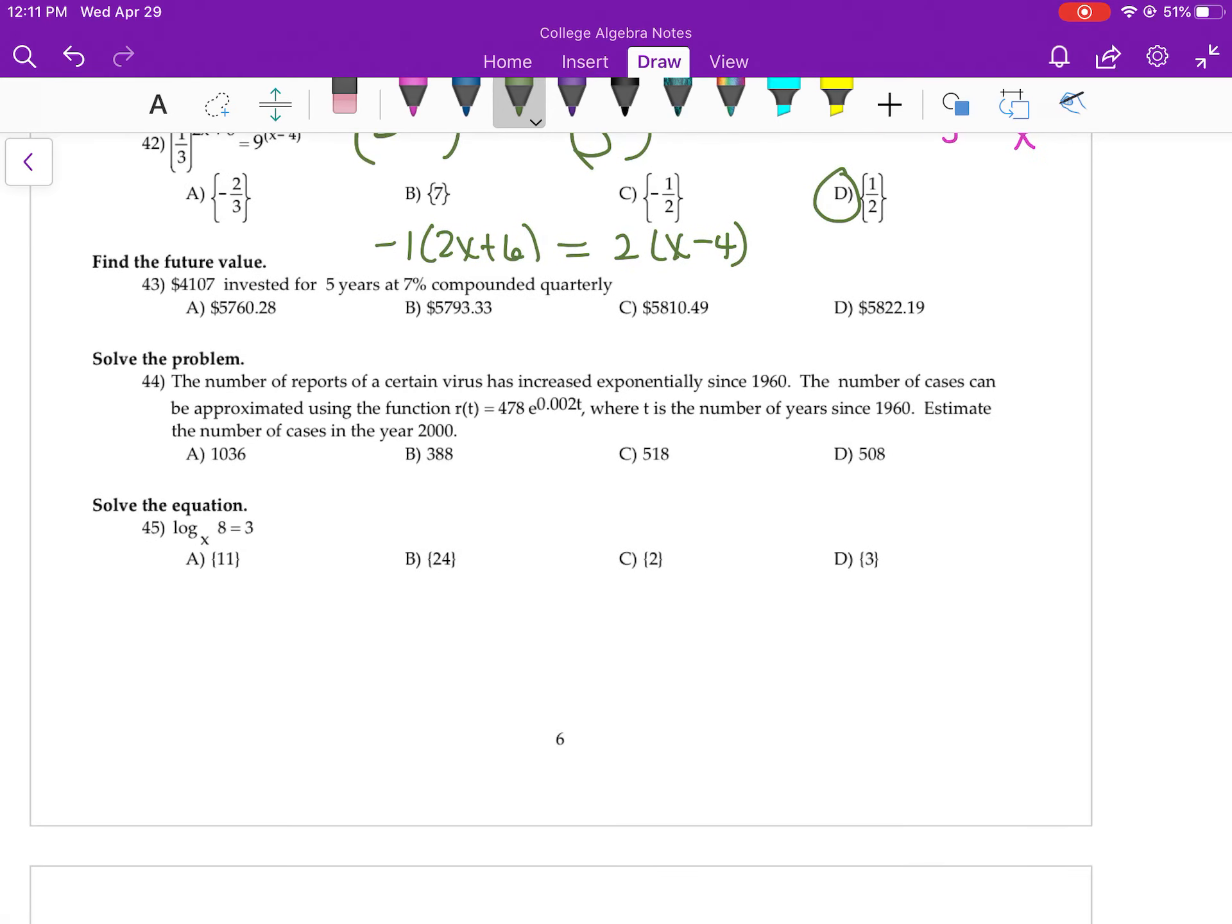Going to compound the interest quarterly. So find the future value. So that's your A. Your present value is 4107. So it's 1 plus R over N quarterly and then to the NT. So 4 times 5. Number 43. The answer is C.